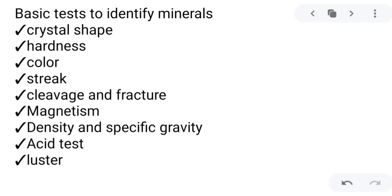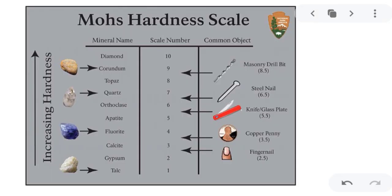Second is hardness. The minerals gold and pyrite are similar in color, and one can easily be mistaken for the other — pyrite is sometimes called fool's gold because it resembles gold. However, one simple test can easily distinguish the two: pyrite is much harder than gold. You can use the Mohs hardness scale, developed by Austrian mineralogist Friedrich Mohs in 1822.